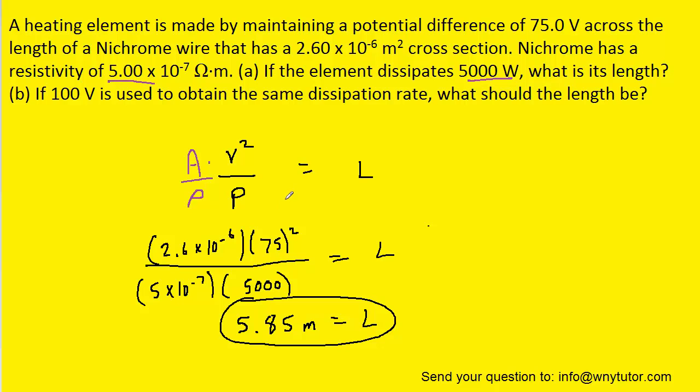For part B, the question states that we want to obtain the same dissipation rate, so that's just another way of saying that the power is the same. So the power is still going to be 5,000 watts, but this time only 100 volts is being used.